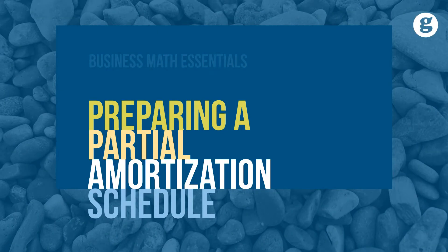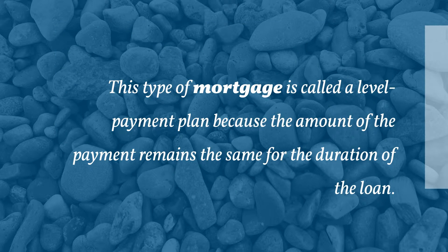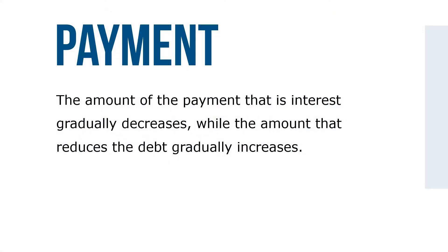Mortgages used to purchase residential property generally require regular, equal payments. A portion of the payment is used to pay interest on the loan, while the balance is used to reduce principal. This type of mortgage is called a level payment plan because the amount of the payment remains the same for the duration of the loan. The amount of the payment that is interest gradually decreases, while the amount that reduces the debt generally increases.